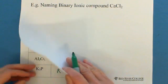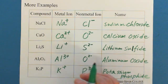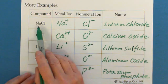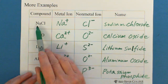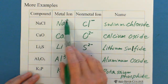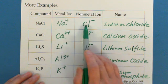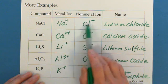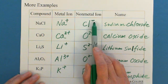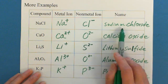And we can see more examples. A compound NaCl, the metal ion is Na, in the first column, positive one charge, Cl is the seventh group, negative one charge, so to name NaCl, sodium chloride.